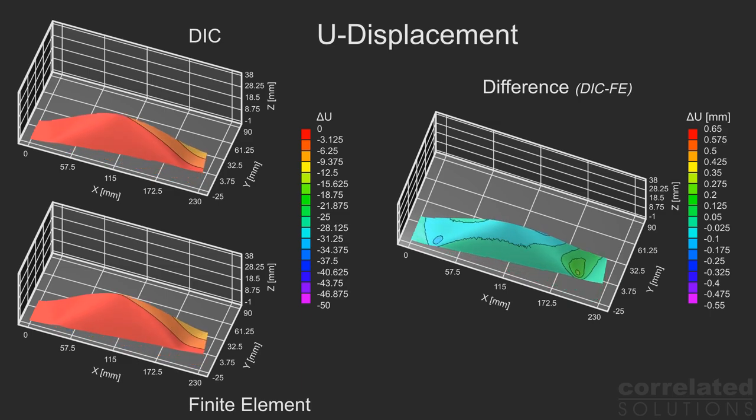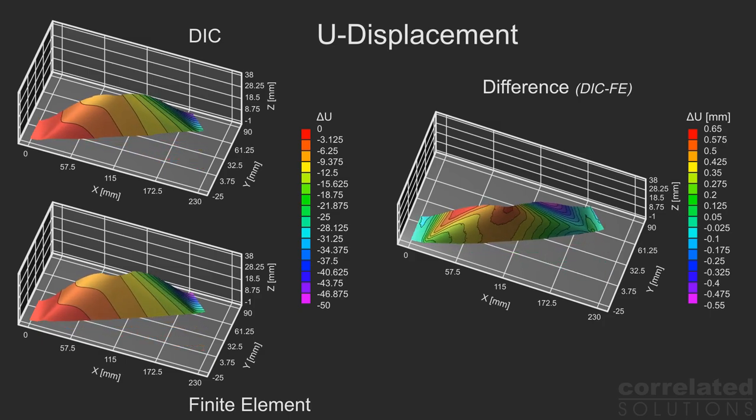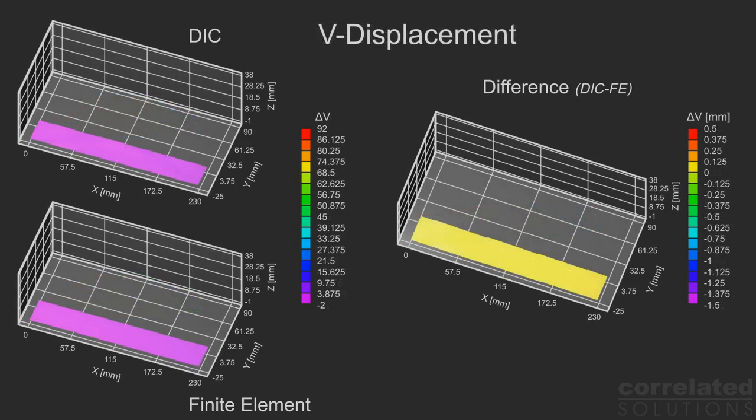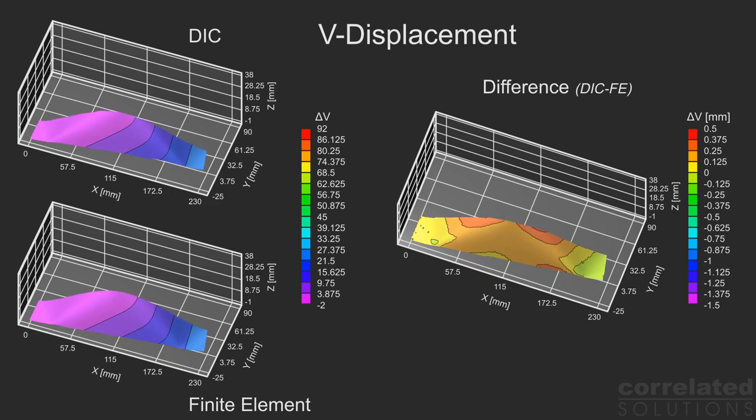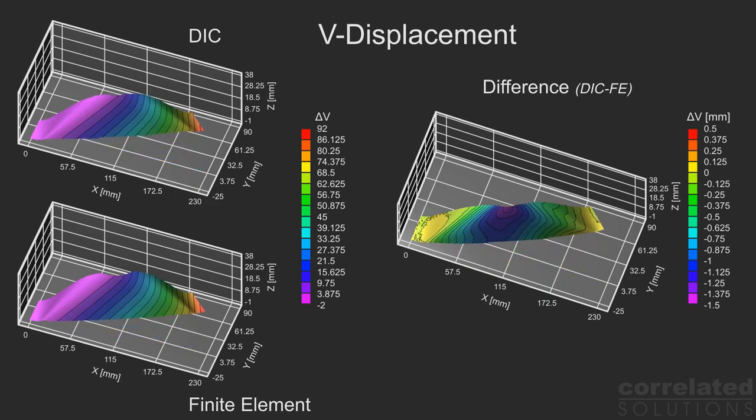For displacement U, the plots on the left are nearly identical, yet the DIC-FE plot on the right shows differences of about 1.3 millimeters. The situation is similar for the V component, which shows maximum differences of 1.5 millimeters, while the individual data plots look nearly the same.